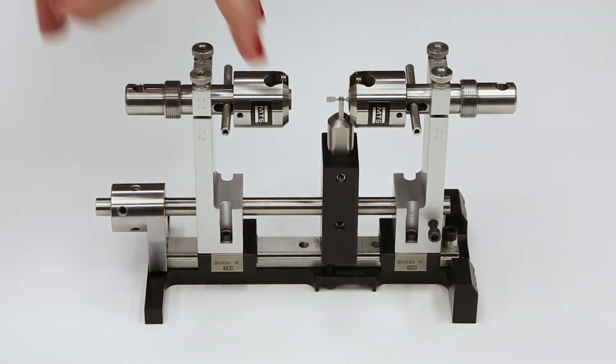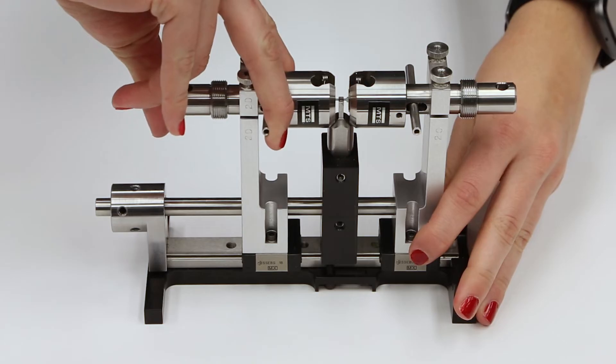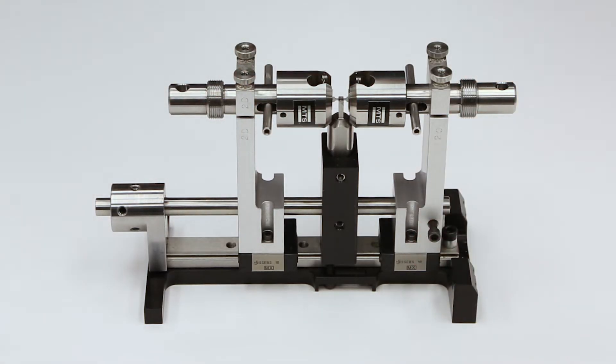Now advance the other grip forward while opening the jaws. At the desired insertion depth, let the jaws close.